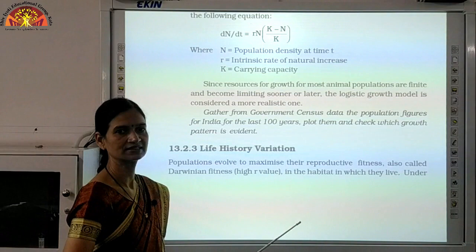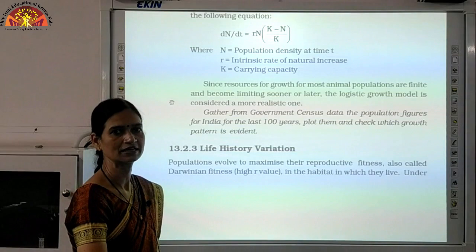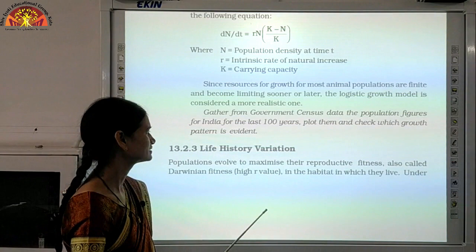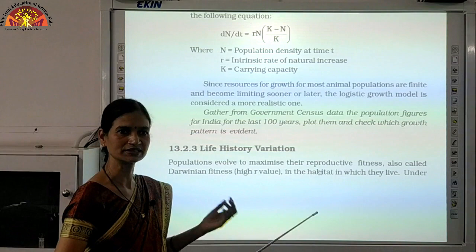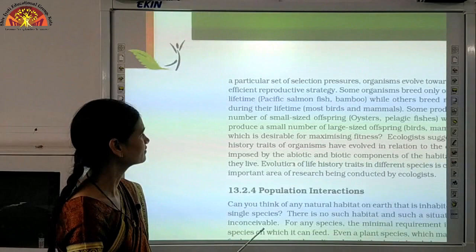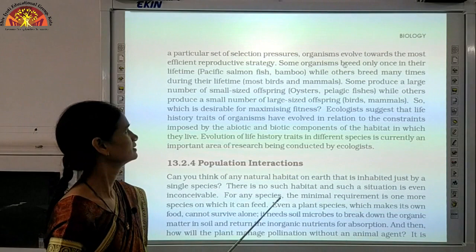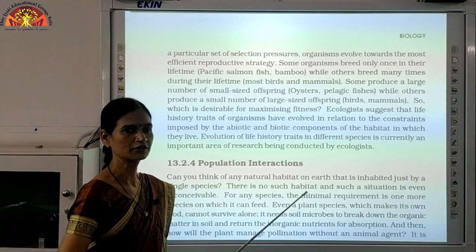The next topic of our chapter is life history variation. We will be discussing population interaction, but before that we should be familiar with this topic. Life history variation means the population has different reproductive fitness. Individuals may be able to reproduce in a different manner according to their habitat, and their R value — that is, intrinsic or natural increase — will all depend on and lead to their reproductive fitness.